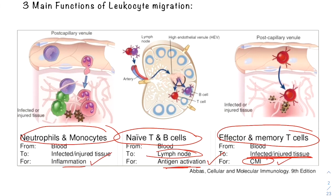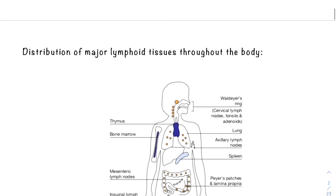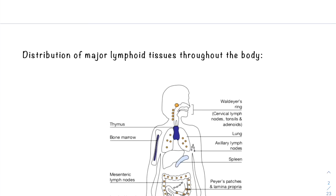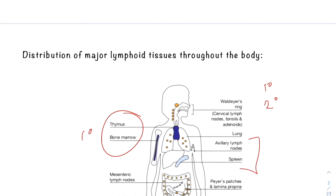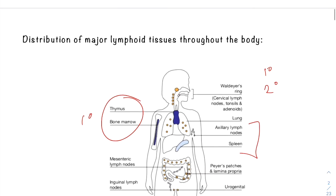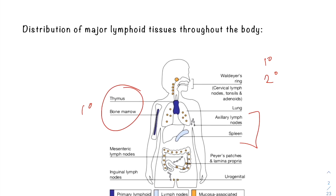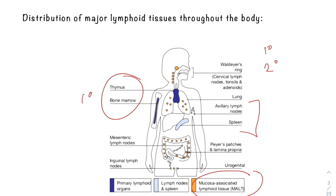Before discussing the steps of leukocyte adhesion and migration, let us revise the distribution of major lymphoid organs. The lymphatic system is composed of primary lymphoid organs — the bone marrow and the thymus — and secondary lymphoid organs including the lymph nodes and the spleen. Certain tissues in the mucous membrane layers also act as secondary lymphoid organs, called mucosa-associated lymphoid tissue (MALT).